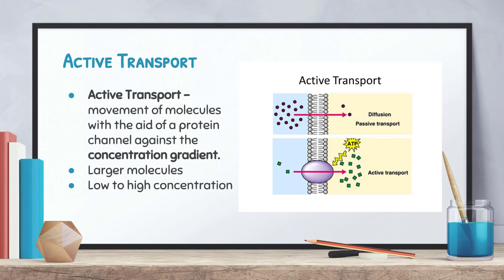Active transport is the movement of molecules with the aid of a protein that goes against the concentration gradient — meaning molecules move from a low to a high concentration. This is very difficult and requires a lot of energy. Going back to the perfume example: normally perfume diffuses from high to low concentration across the room, but active transport would be like taking each perfume molecule and putting it back in the bottle — that requires enormous energy and goes against what would normally happen. Active transport requires both a protein and energy because it goes against the concentration gradient.